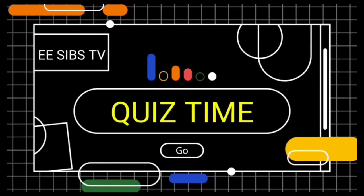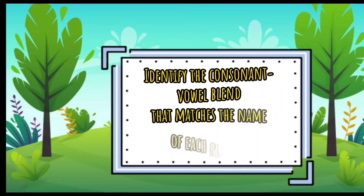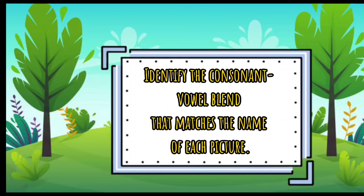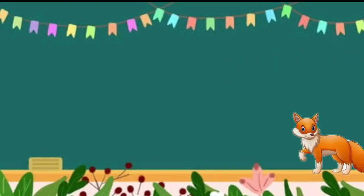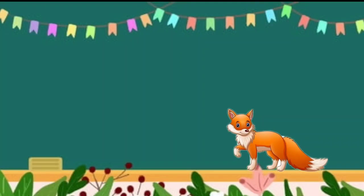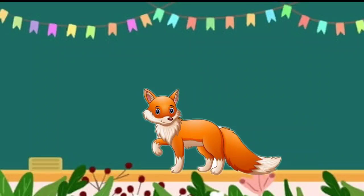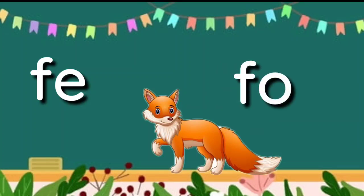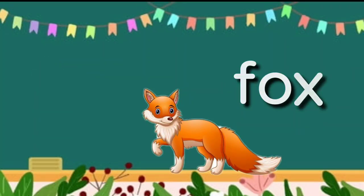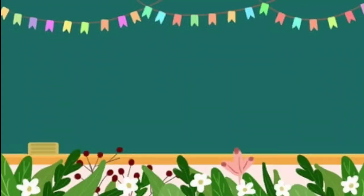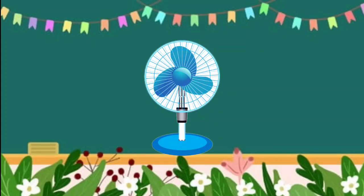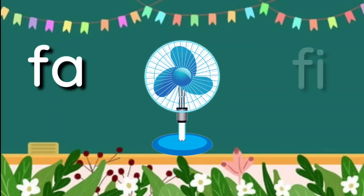It's crease time! Identify the consonant-vowel blend that matches the name of each picture. Oh, what do you see? I think it's a fox. What's the initial blend of the word fox? Is it fe or fo? Fo — you're right! It's fo for fox. Next picture is a fan. What's the initial blend of the word fan? Is it fa or fi?